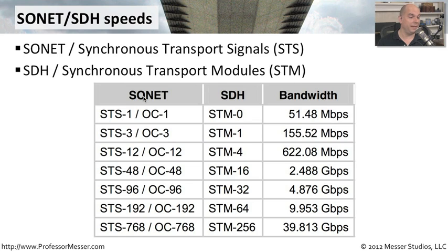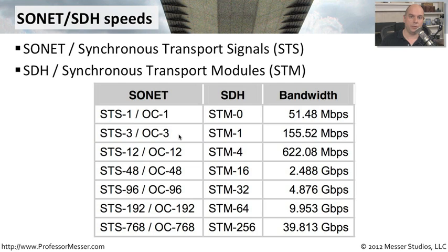For instance, with SONET you have an STS-1, also called OC-1 speed, which is the same as STM-0 — that amounts to 51.48 megabits per second. The next step up is the STS-3, commonly called OC-3, which is the same as STM-1, with a bandwidth of 155.52 megabits per second. OC-12 is 622.08 megabits per second. When you get into speeds like OC-48, OC-96, and OC-192, that last one is 9.953 gigabits per second.